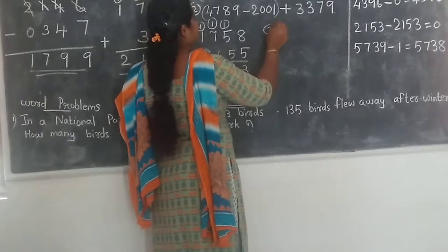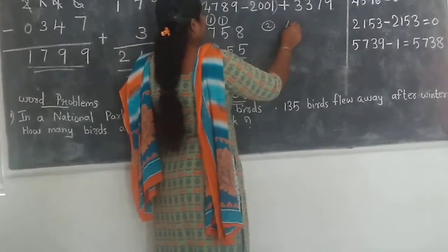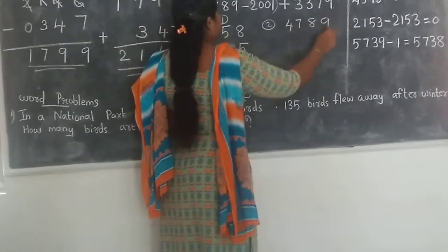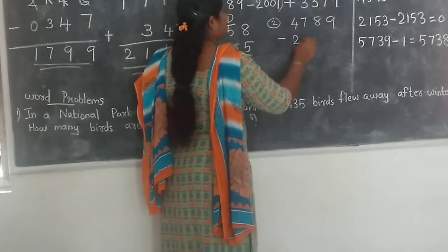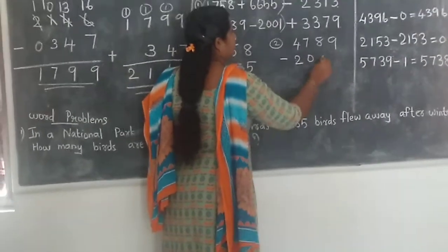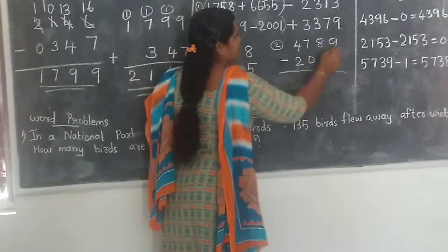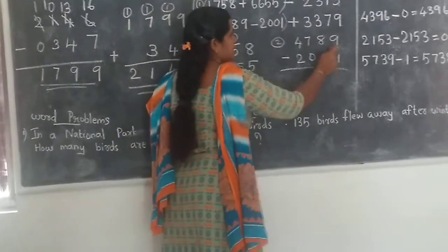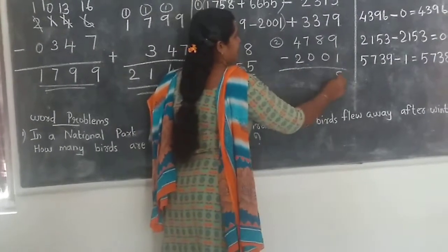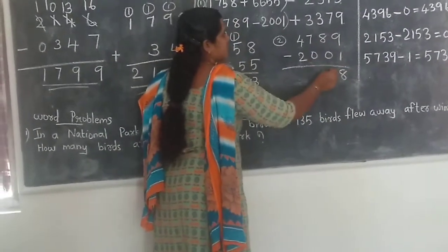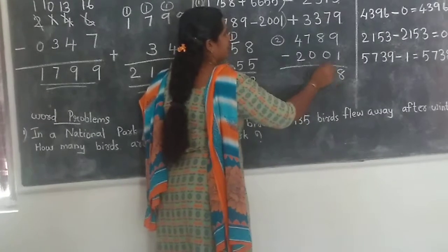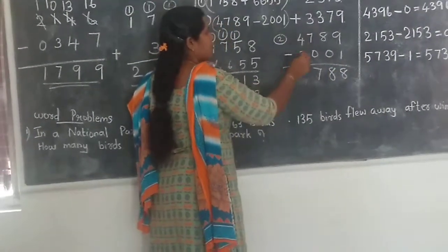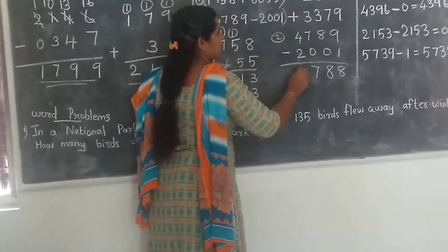Second question: 4789 minus 2001. Ones place: 9 minus 1 is 8. Tens place: 8 minus 0 is 8. Hundreds place: 7 minus 0 is 7. Thousands place: 4 minus 2 is 2. So we get the answer 2788.